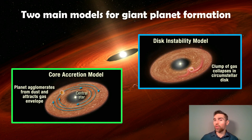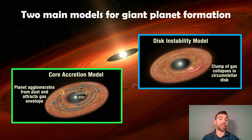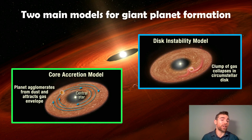The two main models for giant planet formation are disk instability and core accretion. Disk instability, which is not the one I'm looking at in this video, is where you have a localized collapse or fragmentation of the protoplanetary disk and a planet grows very quickly due to a local gravitational instability — it collapses under its own gravity. The one I'm interested in is the core accretion model, which is a much slower process.